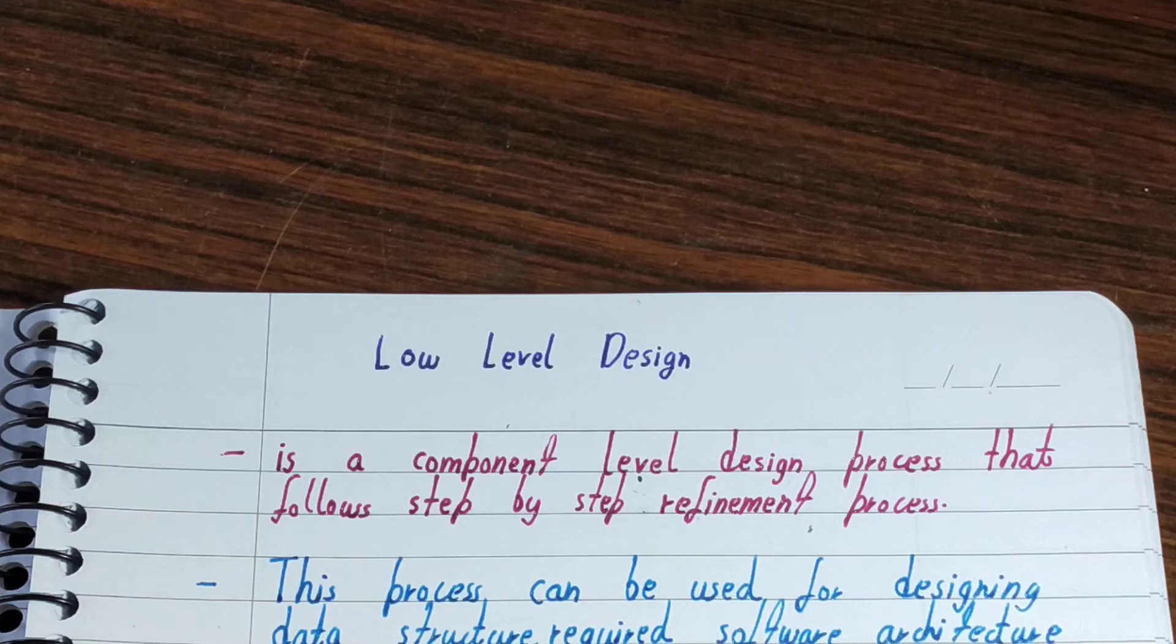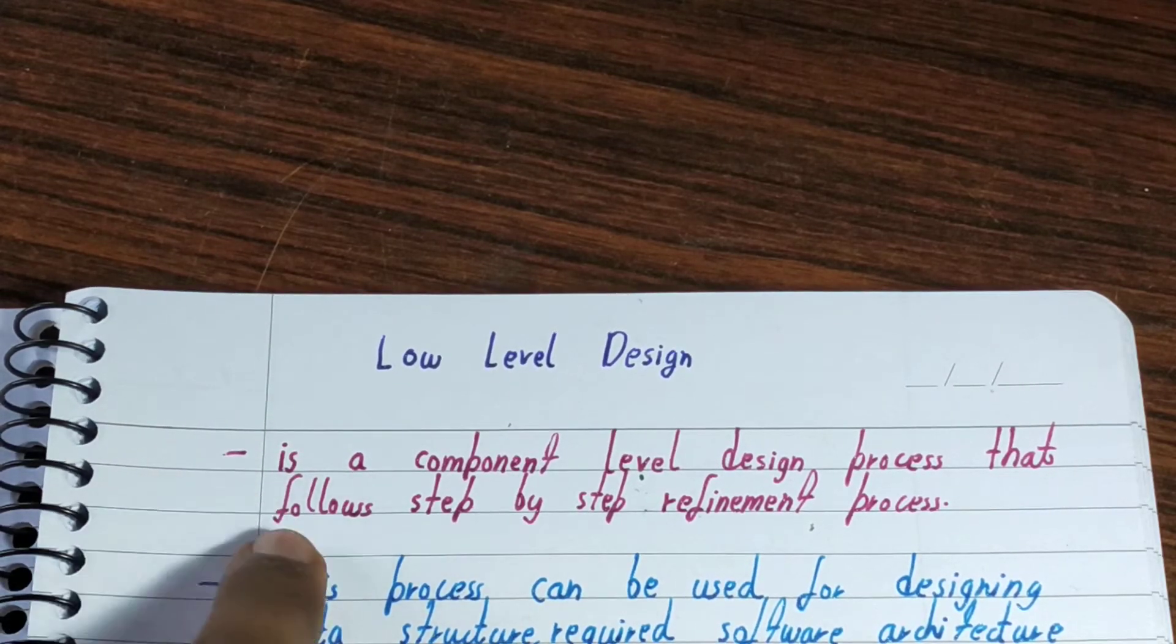While doing high level design, you have to be very accurate and precise. But in case of low level design, you are only designing the architecture, or you can say the blueprint of the software. So errors are okay, they are not taken as seriously. Low level design is a component-level design process.